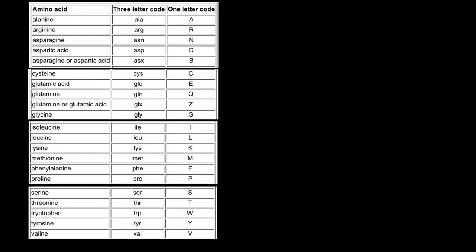Hello, and welcome to Nikolai's genetics lessons. Today is going to be the third lesson in which I explain how to memorize one and three letter abbreviations of amino acids. So far we have learned 10 amino acids, and today we are going to learn these six amino acids.